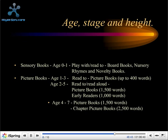Age, stage and height — this is all about knowing your audience. Sensory books play with the child and can be read aloud to the child; these are board books, nursery rhymes, novelty books. Then there are picture books — the walking, hopping and skipping books. For children in the one-to-three age group we're looking at picture books of approximately up to 100 to 400 words. The age two-to-five group, the hopping group, involves picture books up to 1,500 words and early readers up to 1,000 words.